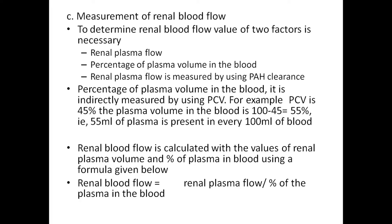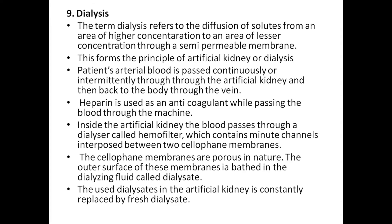Measurement of renal blood flow — to determine renal blood flow, two factors are necessary: renal plasma flow and the percentage of plasma volume in the blood. Renal plasma flow is measured using PAH clearance. Percentage of plasma volume in the blood is indirectly measured by PCV. For example, if PCV is 45%, then plasma volume = 100 − 45 = 55%, meaning 55 ml of plasma is present in every 100 ml of blood. Renal blood flow = renal plasma flow / percentage of plasma in the blood.